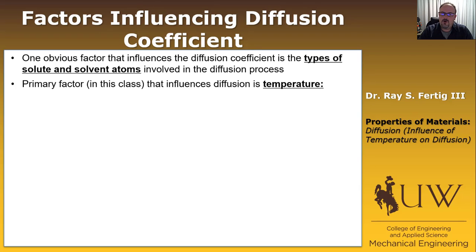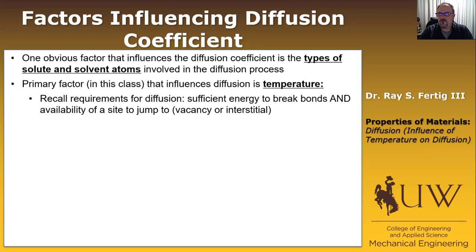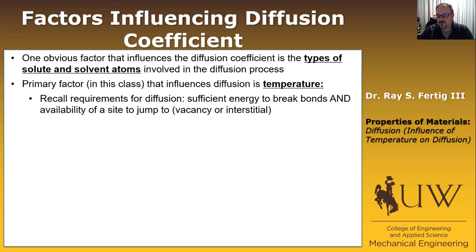Remember what we talked about before regarding what's required for diffusion to actually occur. We had to have sufficient energy to break the bonds from wherever an atom resided to wherever it wanted to jump to, and we had to have an available site to jump to — either a vacancy or an interstitial.